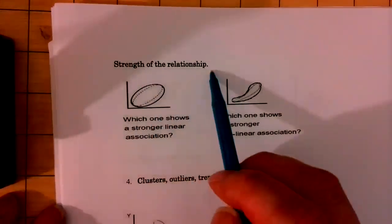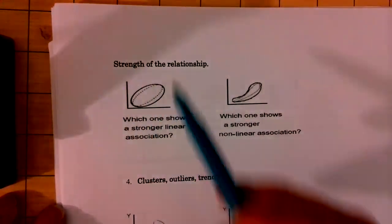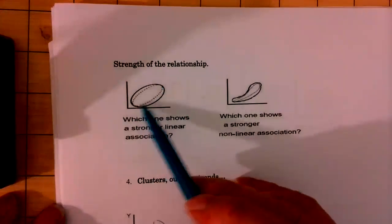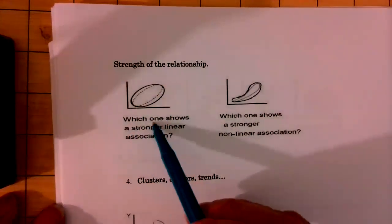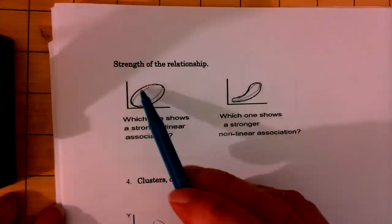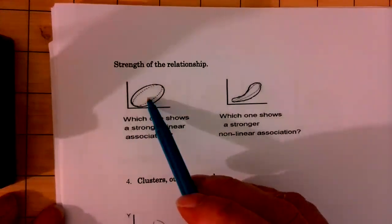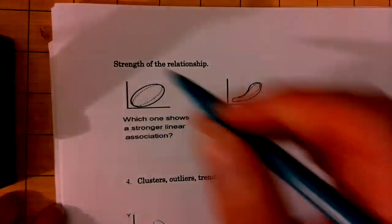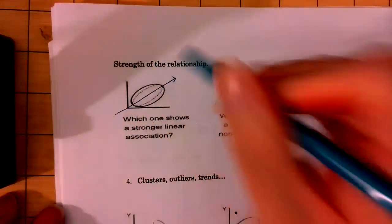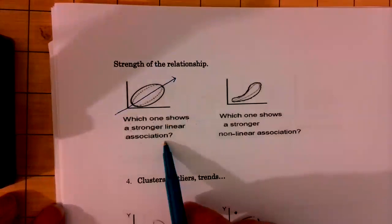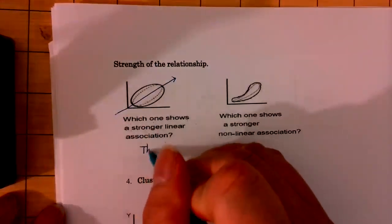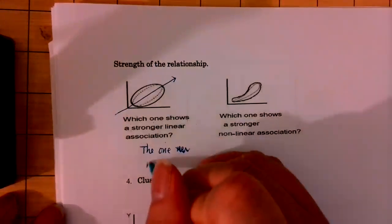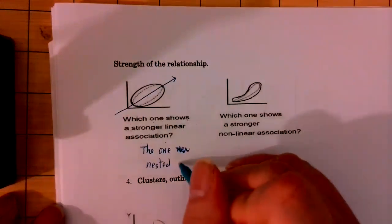Strengths of the relationship — how strong is the relationship? Look at the scatter plot. In this picture you see two scatter plots, one nested inside the other. The question is: which one shows a stronger linear association? Both scatter plots are football-shaped, so of course it's the one nested inside, because it's more close to the fitted line. Which one shows a stronger linear association? The one nested inside.